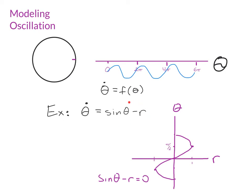Fixed points of the system are given by sin theta minus r equals 0. So to draw in the fixed points, I draw in the curve where sin theta minus r equals 0. That's the curve r equals sin theta.